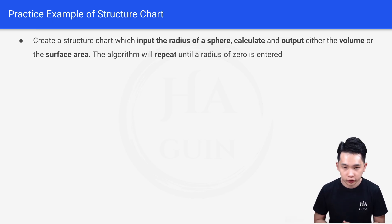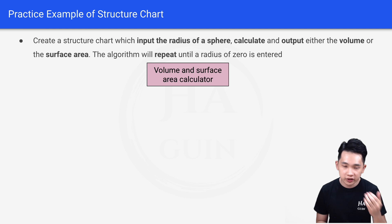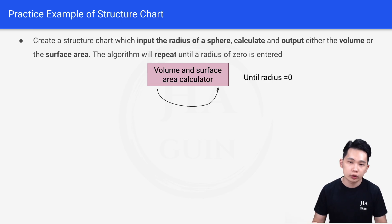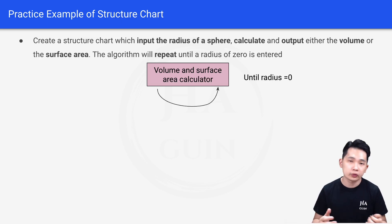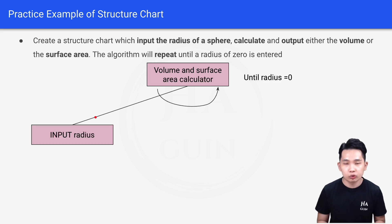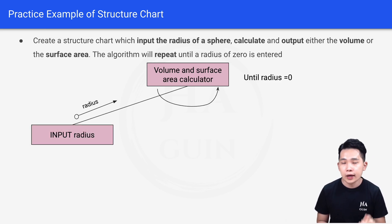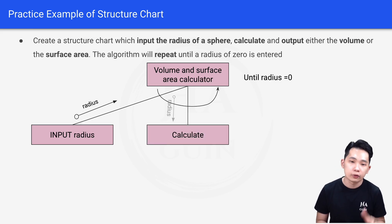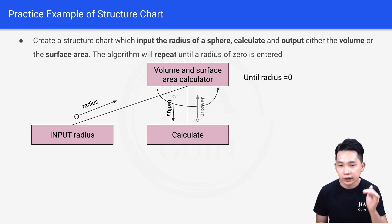Let's get started on drawing the structure chart. We'll write the name of the program: Volume and Surface Area Calculator. We have an arrow indicating a loop — the program keeps repeating until radius equals zero. The first module is Input Radius, with data item radius. Next is the Calculate module, which takes radius as input and produces answer as output.